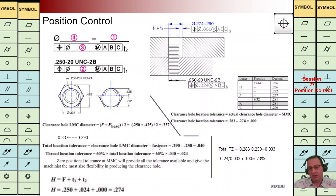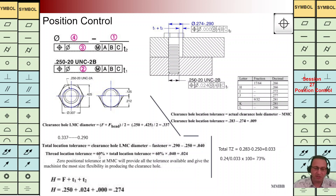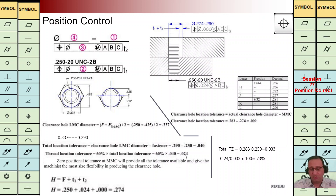When we take 0.29 and subtract the size of the bolt (0.25), we can calculate the total tolerance zone — it is 0.04. Now we have the total TZ. Typically 60% to 75% of this total TZ is allocated to the threaded hole. Let's consider 60%. We calculate unknown number two: the TZ for the threaded hole is 60% of the total TZ, which is 0.024.